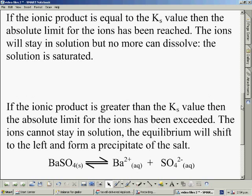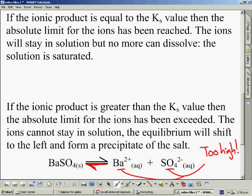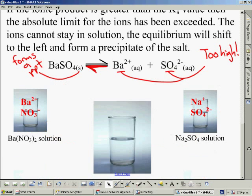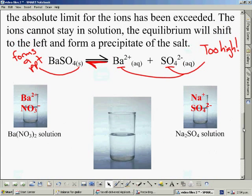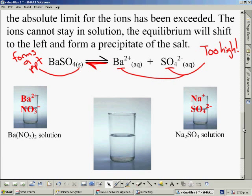The final one is that if the ionic product ever exceeds the KS value, then the two concentrations of the ions are too high. They cannot stay in solution. The equilibrium shifts to the left and we're going to get some salt forming as a precipitate. As a consequence of it shifting, the ion concentrations drop down until it reaches equilibrium.